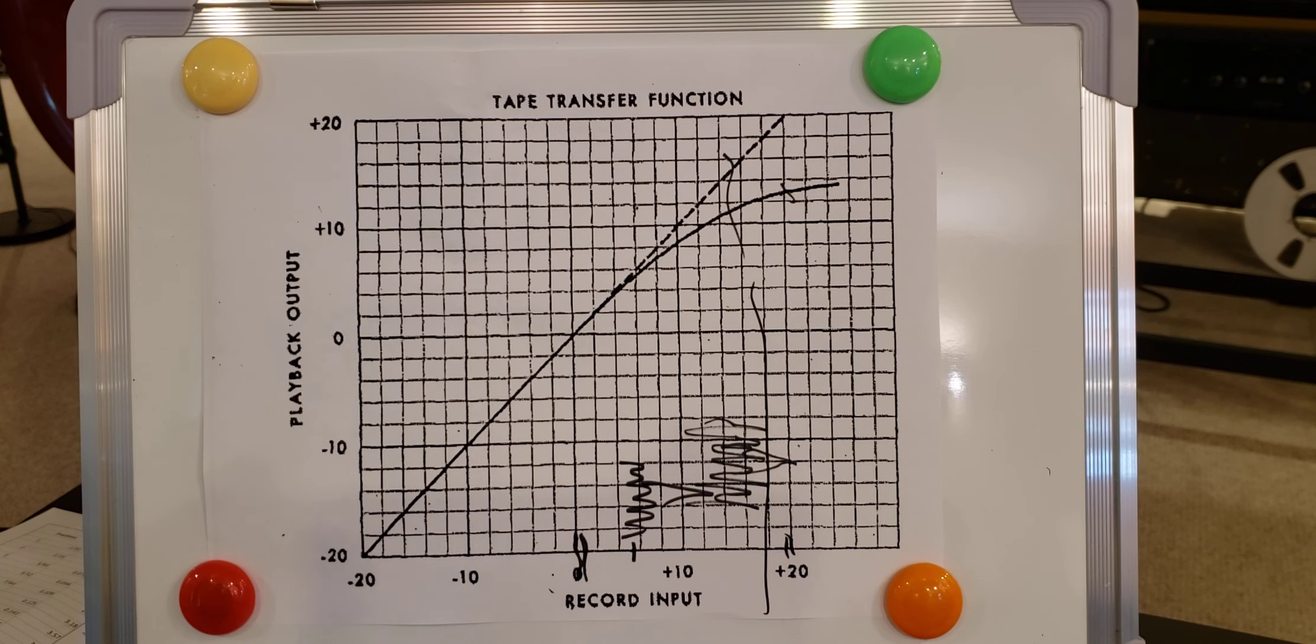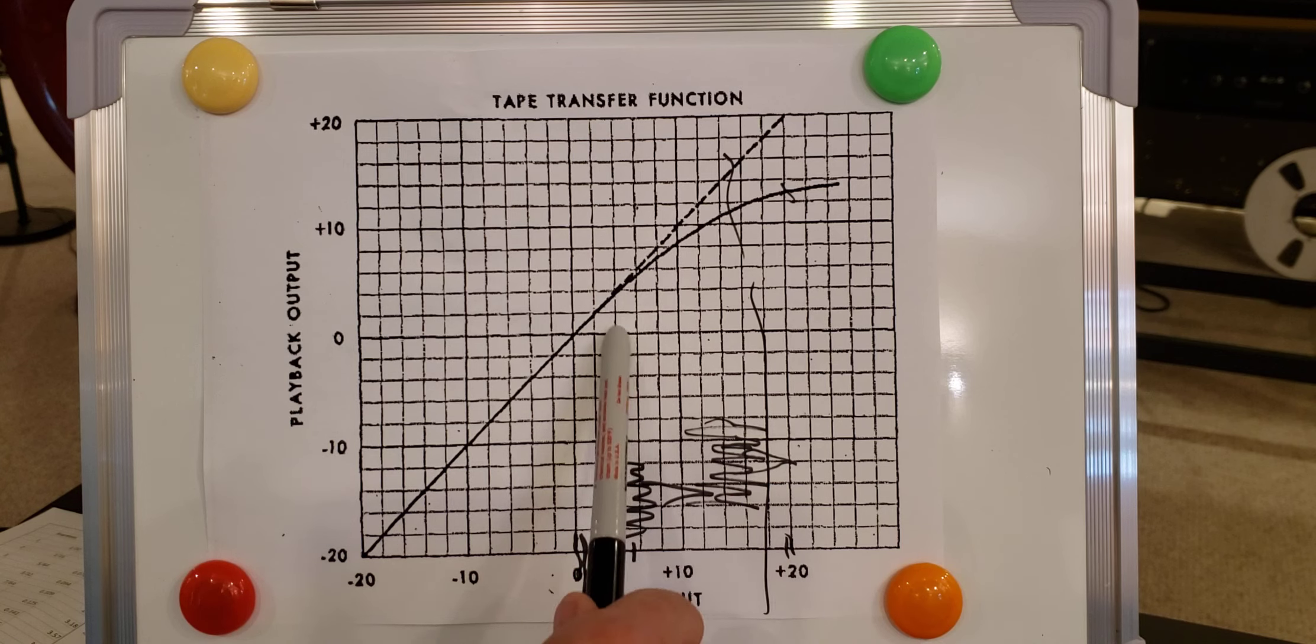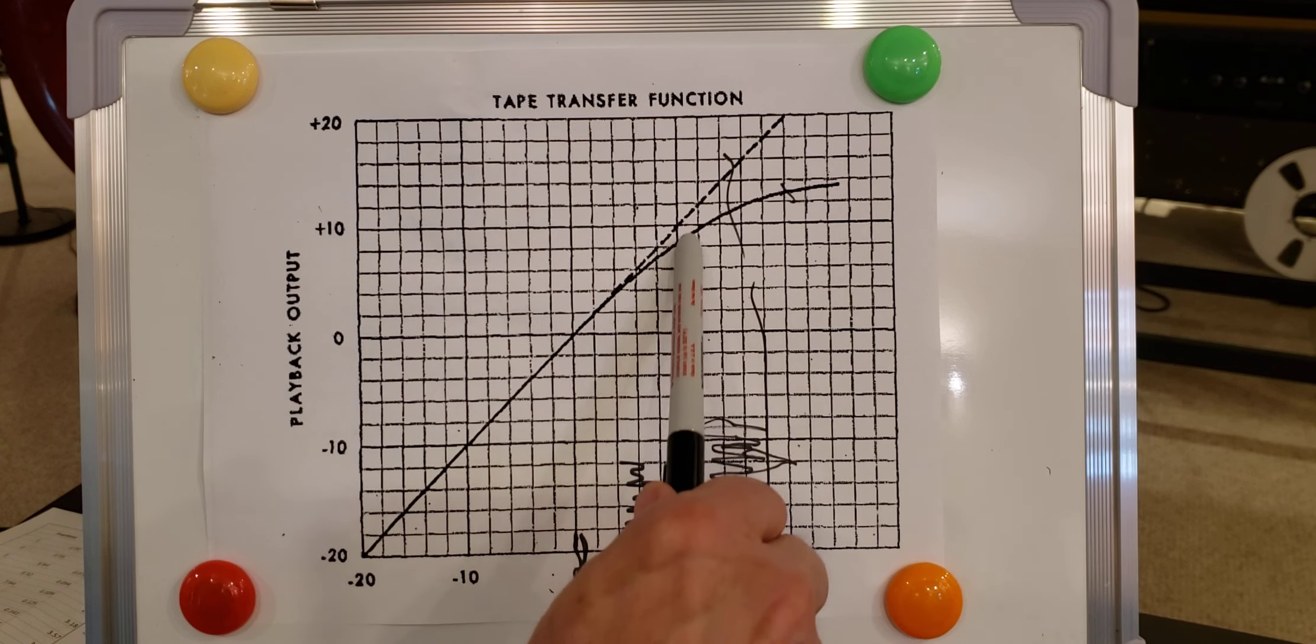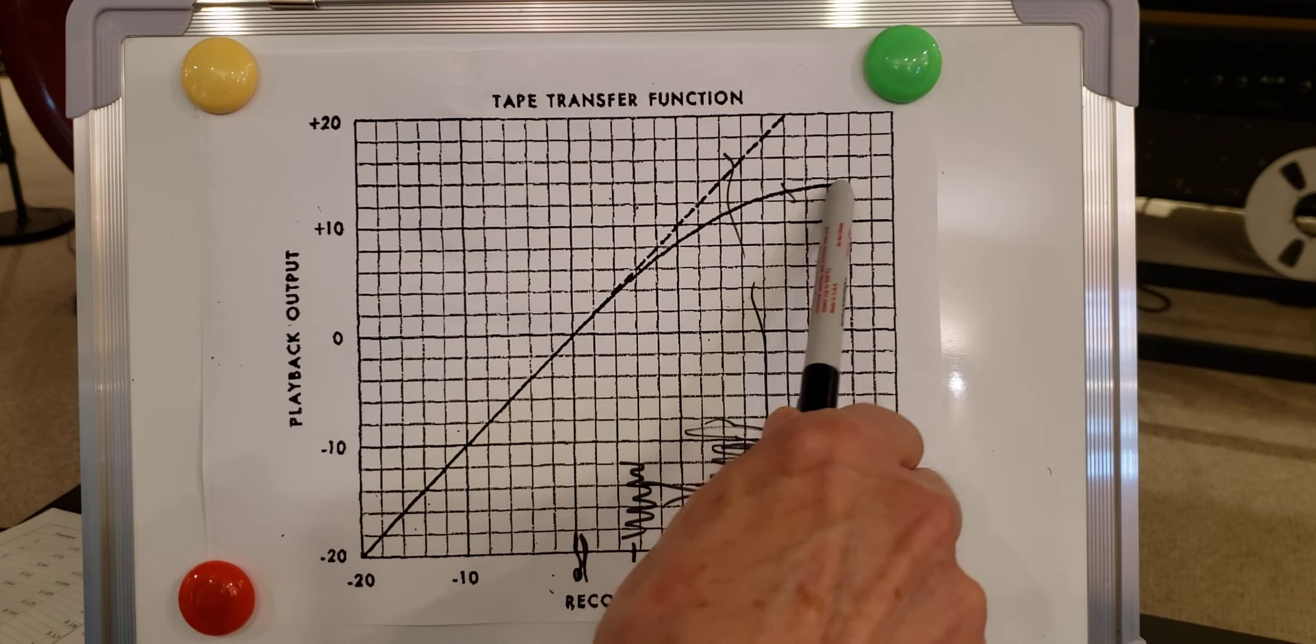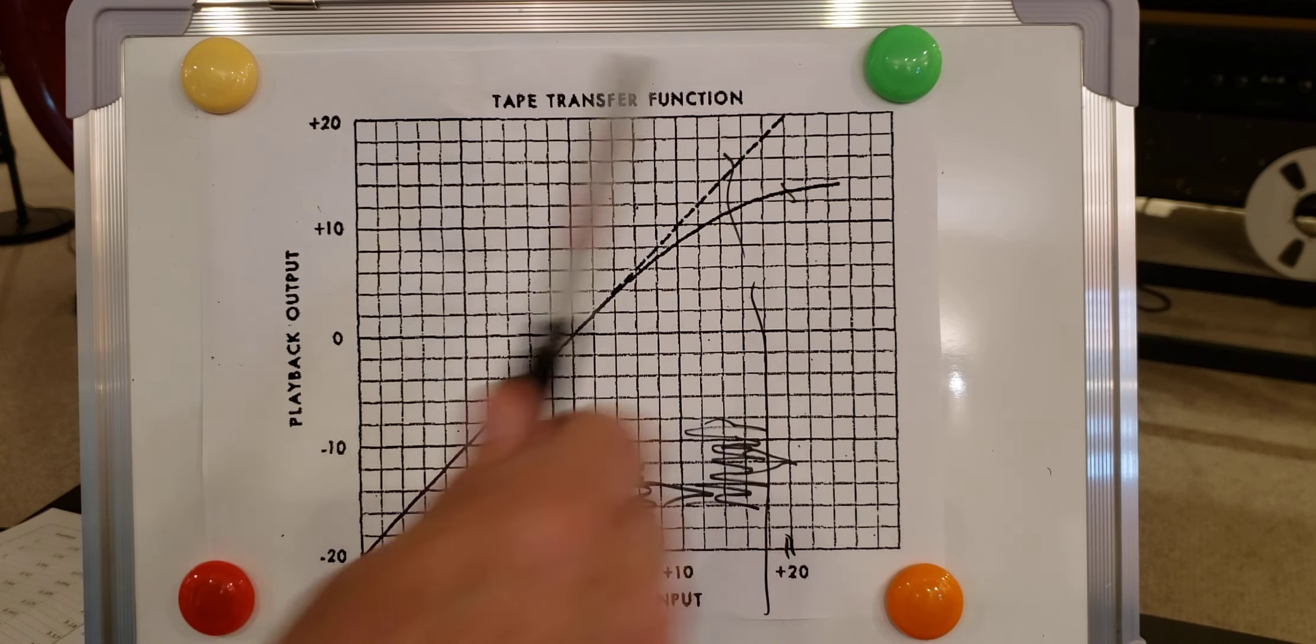You know the tape compresses and limits in a very soft way and that's what a lot of people like. But there is also such a thing as going overboard. You see minor compression and softening here is okay but when you start getting into this area it becomes very very obvious. And today we're going to look at that situation.